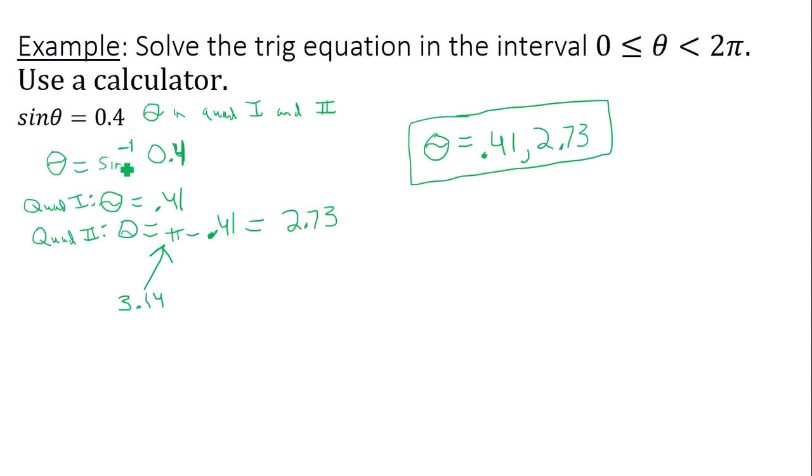Remember, the inverse trig function was only used as an intermediate step. It was not part of the original question, so I can open up all four quadrants. In this case, quadrants 1 and 2 were the positive quadrants for sine. Well, that's all I have for you right now, so I hope you enjoyed. Thank you for watching.